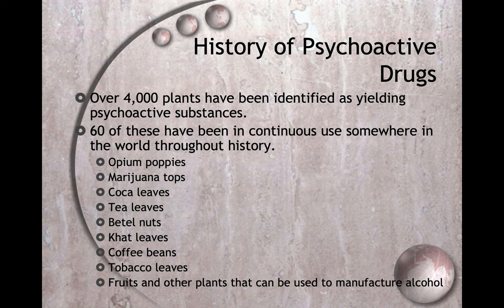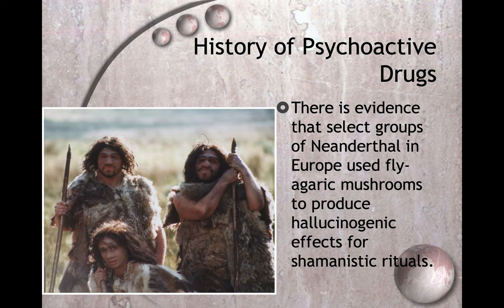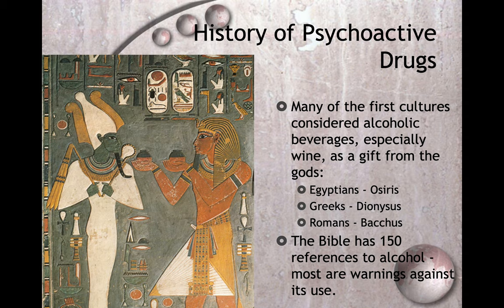Over 4,000 plants have been identified as yielding psychoactive substances, and 60 of these have been in continuous use somewhere in the world throughout history — opium poppies, marijuana tops, coca leaves, tea leaves, betel nuts, khat leaves, coffee beans, tobacco leaves, and fruits and plants that can be fermented into alcohol. There is evidence that select groups of Neanderthals in Europe used fly agaric mushrooms to produce hallucinogenic effects for shamanistic rituals. The first cultures considered alcoholic beverages, especially wine, as a gift from the gods — the god of wine in Egypt was Osiris, in Greece Dionysus, in Rome Bacchus.